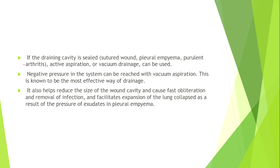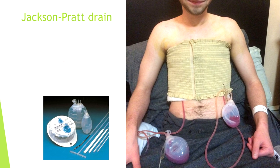If the draining cavity is sealed — a sutured wound, pleural empyema, or purulent arthritis — active aspiration or vacuum drainage can be used. Negative pressure is achieved with vacuum aspiration, and this is known to be the most effective way of drainage. It reduces wound cavity size, causes fast obliteration and removal of infection, and facilitates lung expansion collapsed due to pressure exudates in pleural empyema. Here we see the Jackson-Pratt drain, an active aspiration drain.